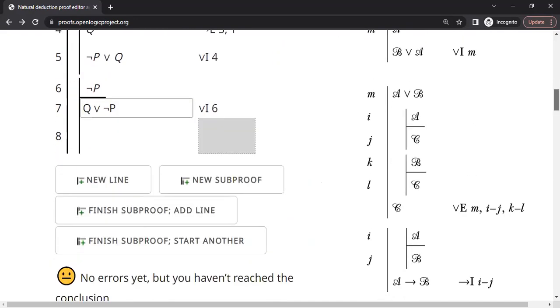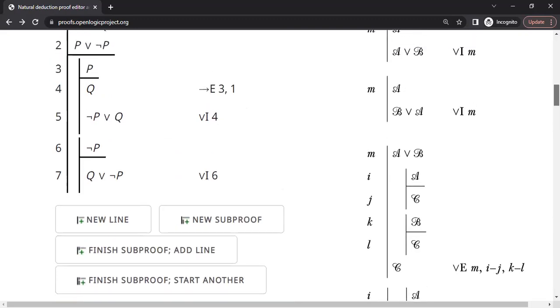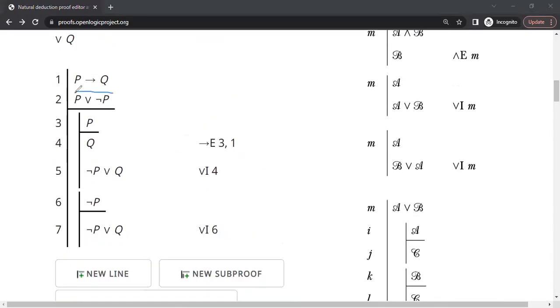Yeah. So let's check the proof. No errors. We started with this. This is P or NOT P which we know holds true. We started with P. We end up with NOT P or Q. Similarly, we started with NOT P and we also end up with NOT P or Q.